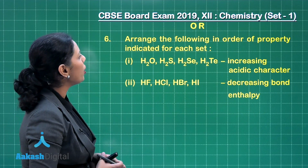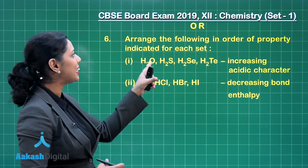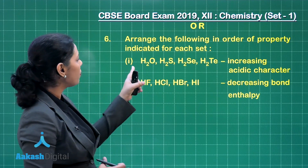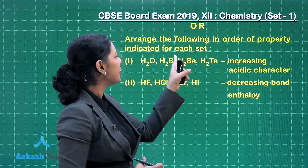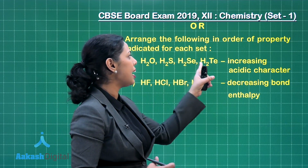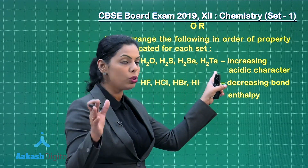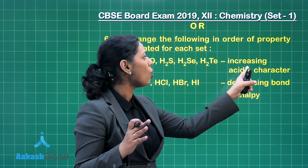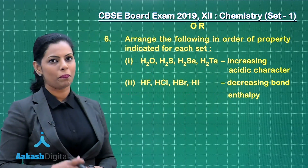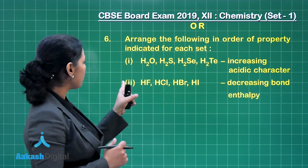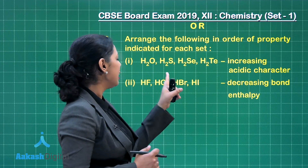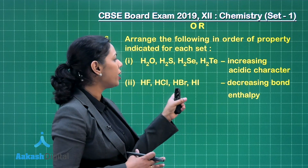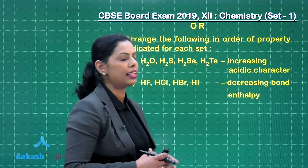Arrange the following in order of the property indicated for each set. You have H2O, H2S, H2Se, and H2Te — arrange these compounds in increasing order of acidic character. Second set: HF, HCl, HBr, and HI — arrange them in decreasing order of bond enthalpy.